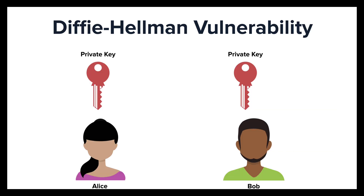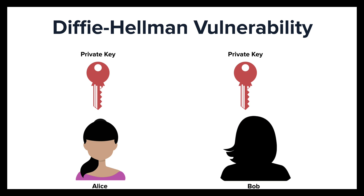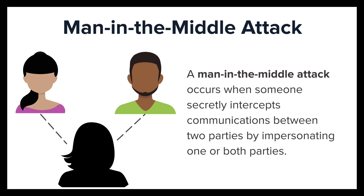A vulnerability of the Diffie-Hellman key exchange is a lack of authentication. If Alice believes that she's sending her public key to Bob, but it is really an eavesdropper, then she ends up sharing a secret key with the wrong person. This kind of attack is called a man-in-the-middle attack — a type of cyber attack where an imposter inserts him or herself into a conversation between two parties. This imposter impersonates both parties and gains access to information the two parties were trying to send to each other, and can intercept, send, and receive data meant for someone else. Either party may not even know what's happening until it's too late.